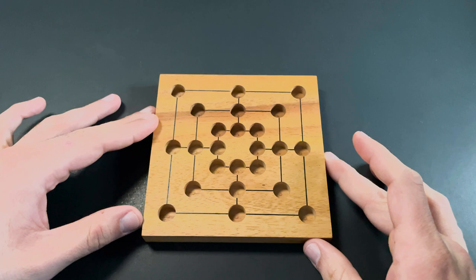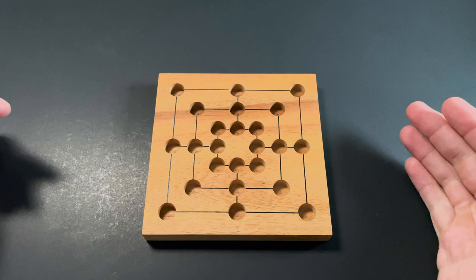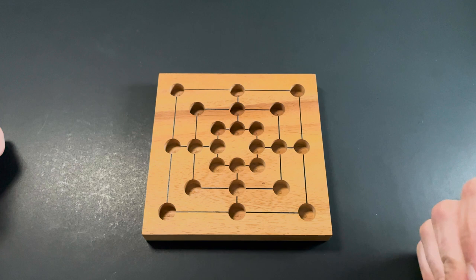Now, in stage one, basically, again, as I said, the objective is building mills, preventing my opponent from building mills and eliminating as many pegs as I can from my opponent and watching my back so they won't do that to me as well.